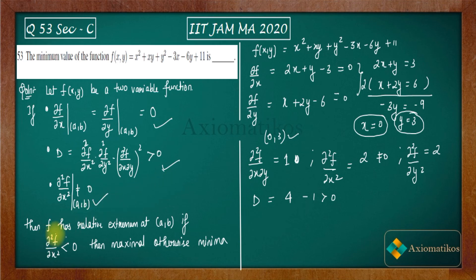So what we have to check? We have to check the sign of ∂²f/∂x². Now see the sign of ∂²f/∂x² is actually positive. That means that f(x,y) attains minima at (0,3).